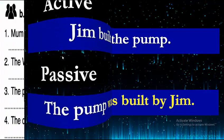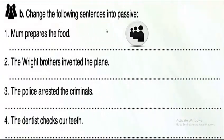Exercise B: Change the following sentences into passive. Number one: 'Mom prepares the food.' Number two: 'The Wright Brothers invented the plane.' Number three: 'The police arrested the criminals.' Number four: 'The dentist checks our teeth.' Take your time and try to change them into passive carefully.